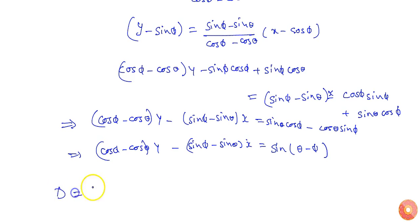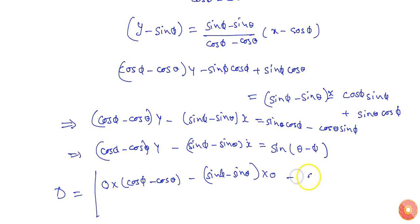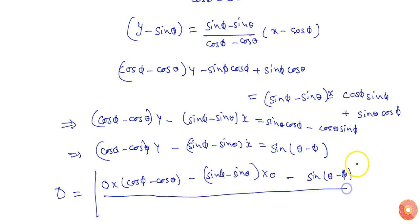The distance from the origin will be found by putting the point (0, 0) into the line formula. I will get: 0 times (cos phi minus cos theta) minus (sin phi minus sin theta) times 0 minus sin(theta minus phi), divided by the square root of a squared plus b squared.